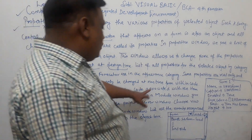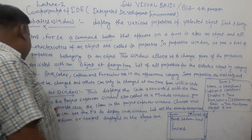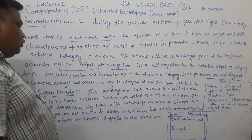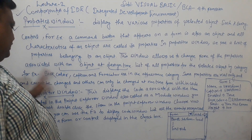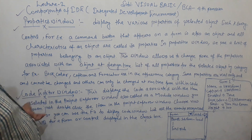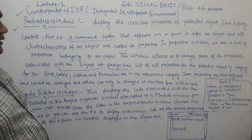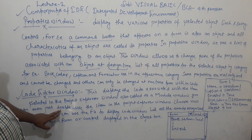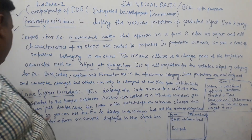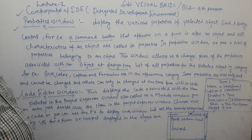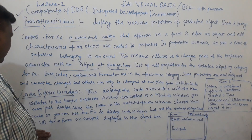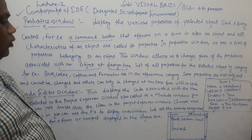The Code Editor Window displays the code associated with the item selected in the Project Explorer Window. It is also called the Module Window. You can double-click an item in the Project Explorer Window, choose View Code, or press F7 to display the code window. It lists all the events recognized by Visual Basic for a form or control, displayed in the object box.